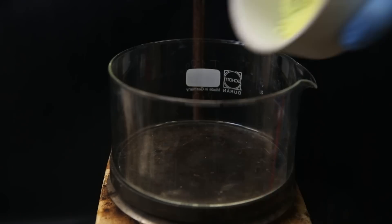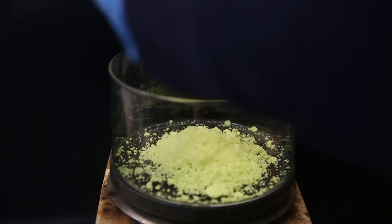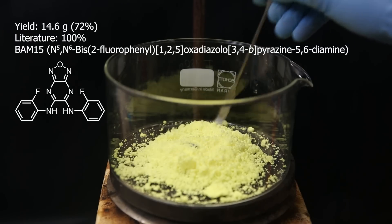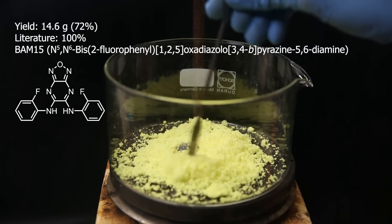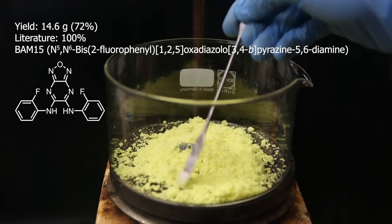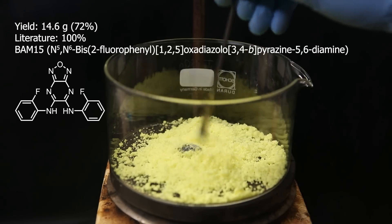When that's done, I transfer it all to a crystallizing dish under light heat to evaporate the remaining solvent, and the yield of BAM-15 turned out to be 14.6 grams, which is 72%. In literature, they really tried to get absolutely everything out, so they got a 100% yield, but I don't really have to bother with that. You can do that if you want to.